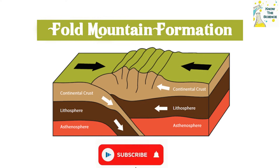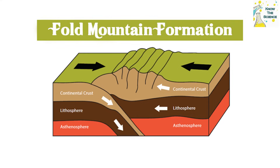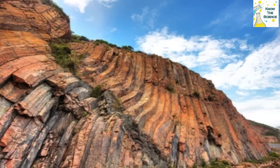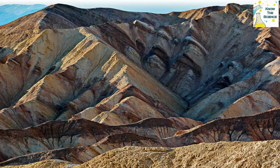Fold mountains are created when the plates push up against one another in such a way that the Earth's crust bends, folds, or warps. This process can create large, rippling mountain ranges or sharp mountains, but usually occurs over thousands or even millions of years. Plates will continue to push up against one another and the Earth will begin to slowly bend and become misshapen as the pressure is maintained.